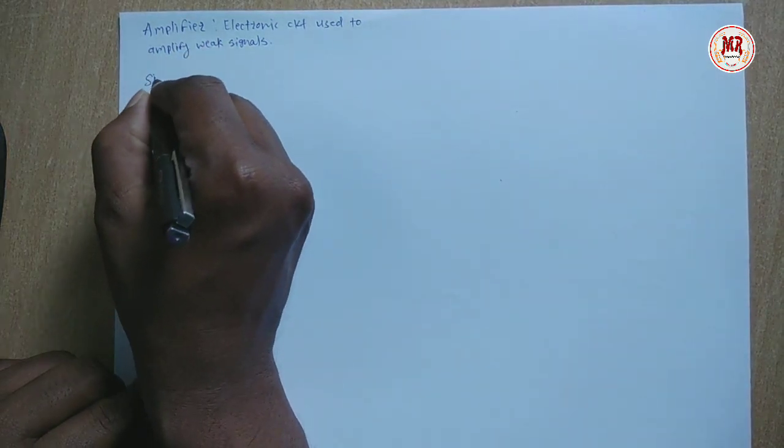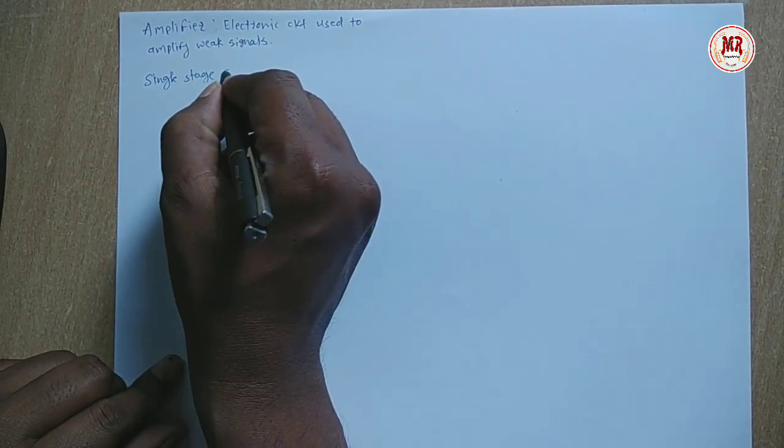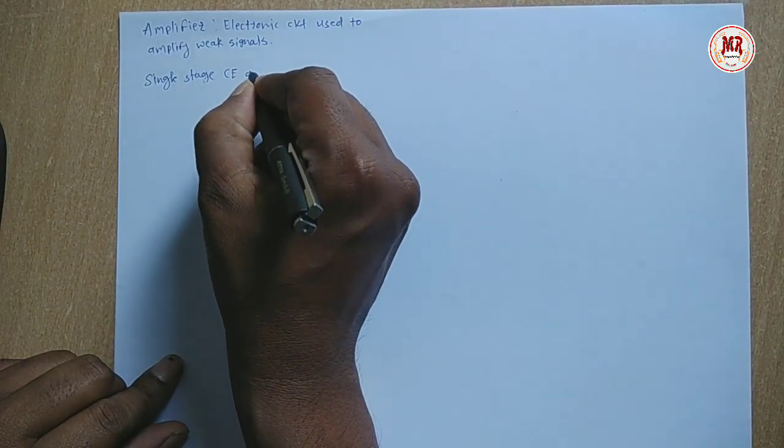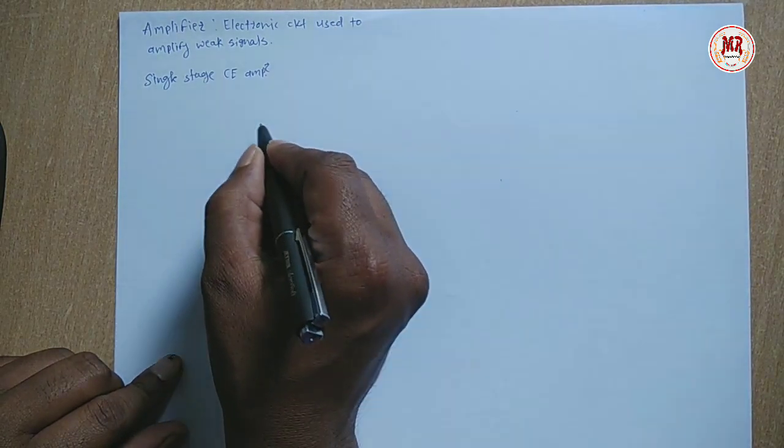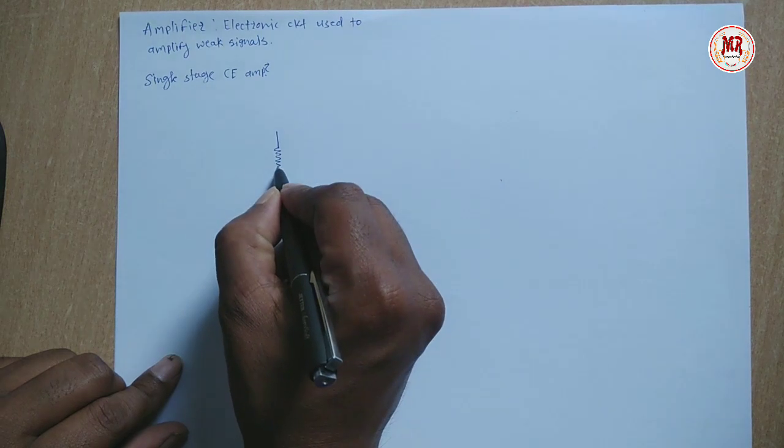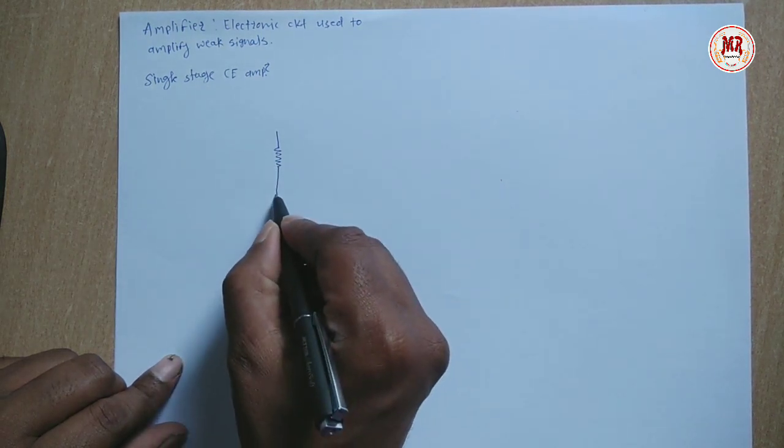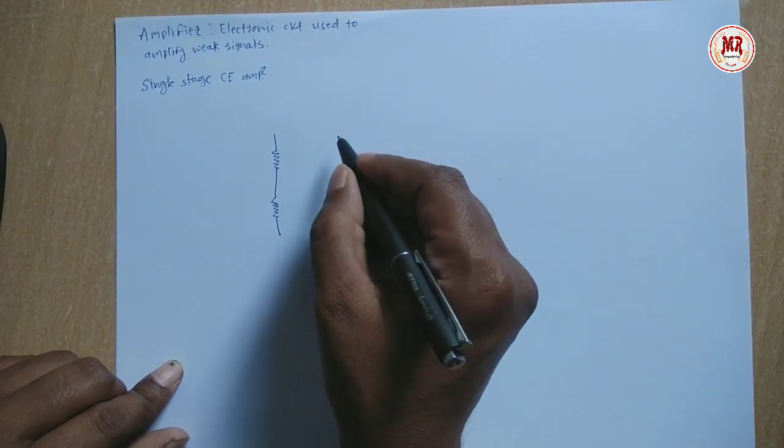Let us see the diagram of single stage CE amplifier. It mainly consists of four resistances R1, R2, RC and RE. Then three capacitors: input capacitor CIN, coupling capacitor CC and bypass capacitor CE.